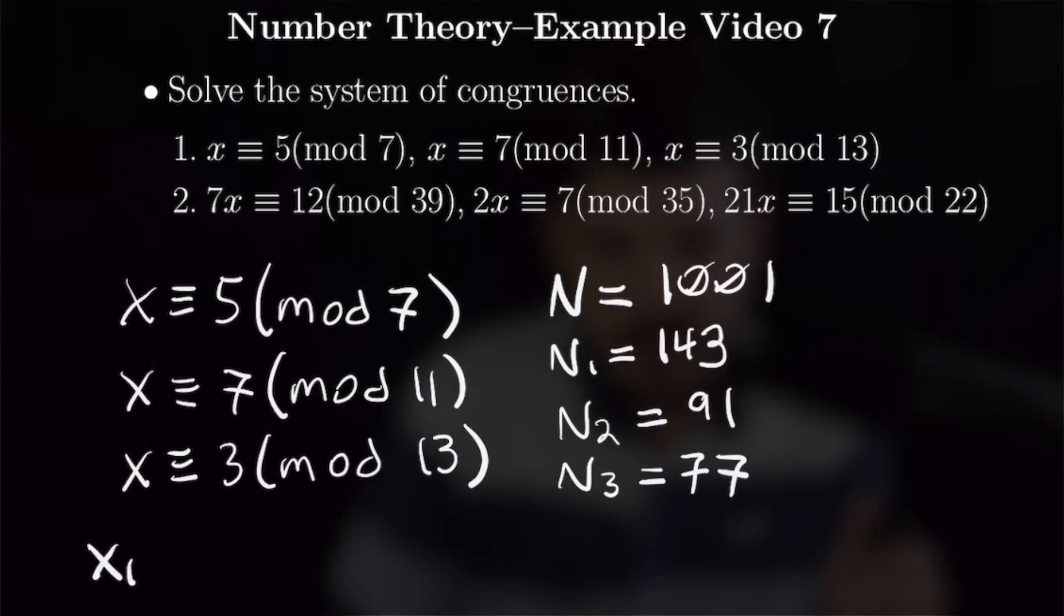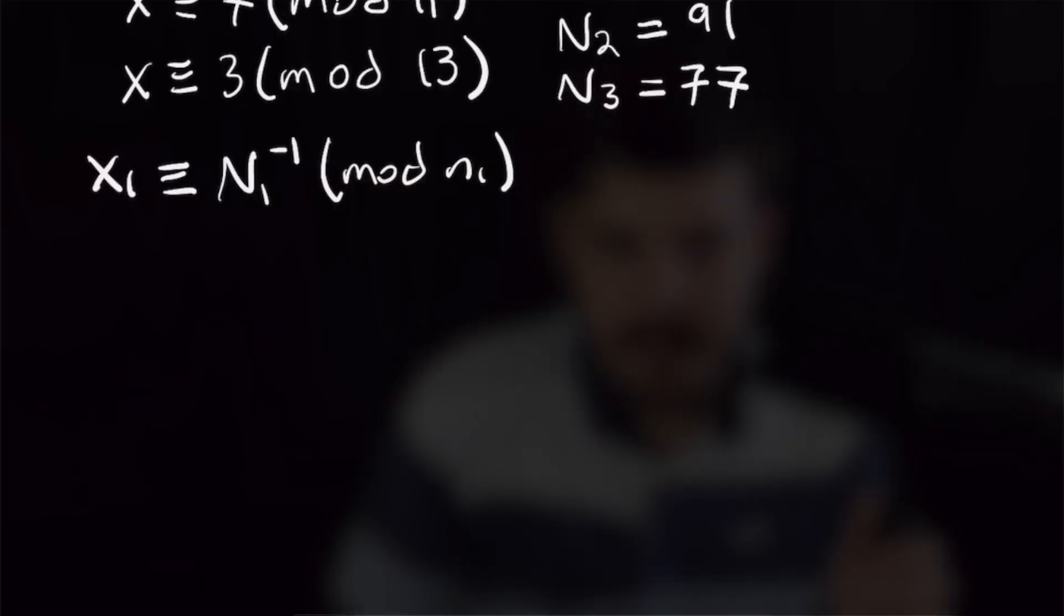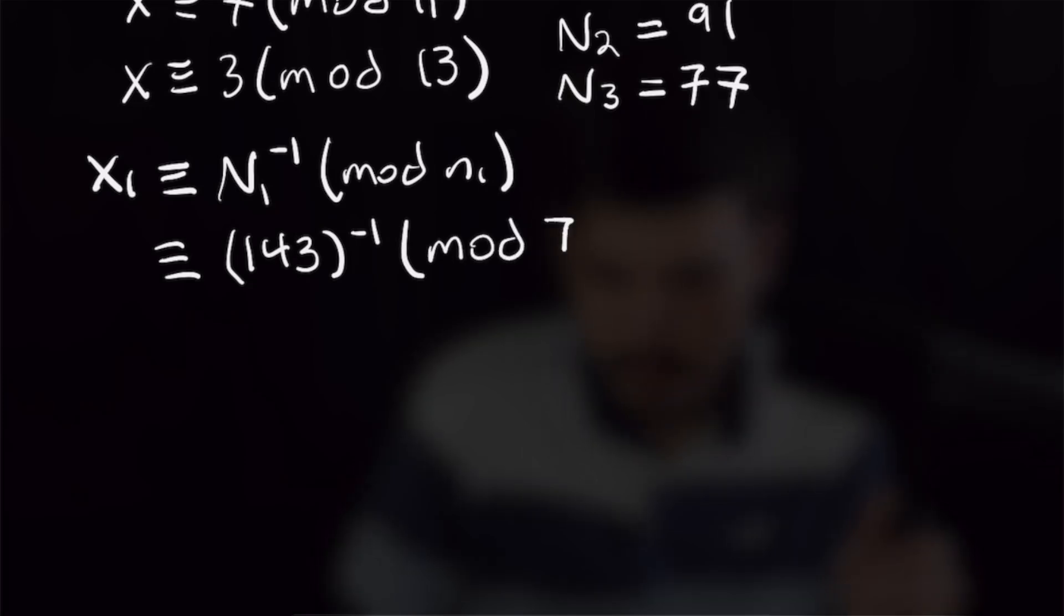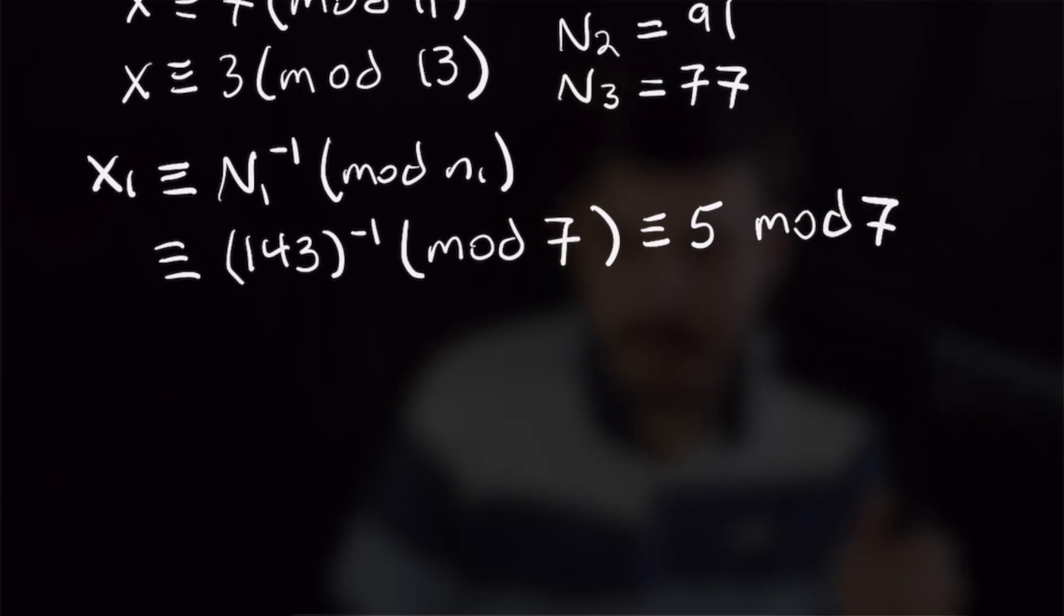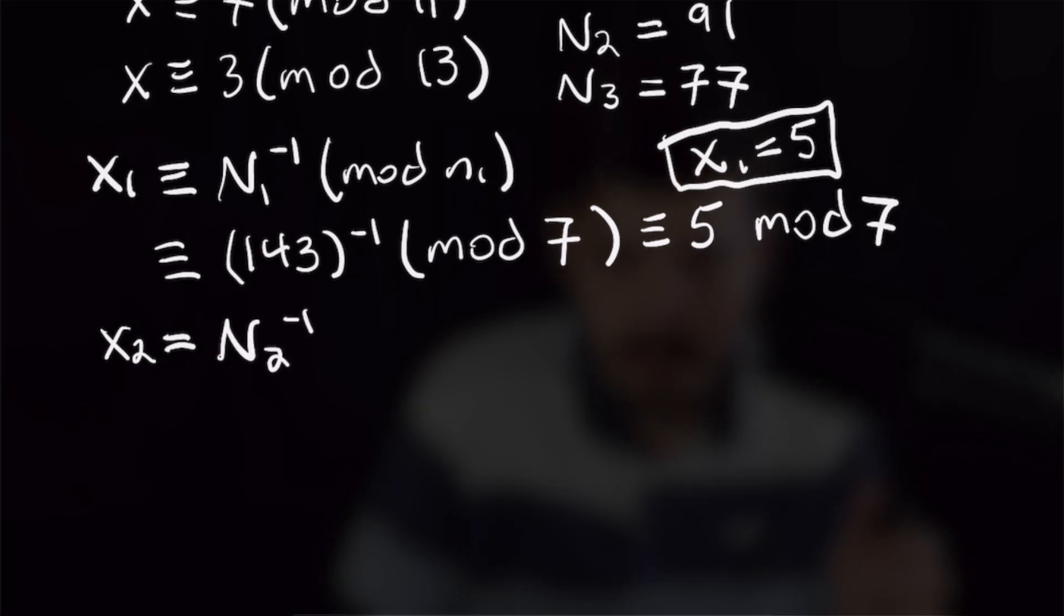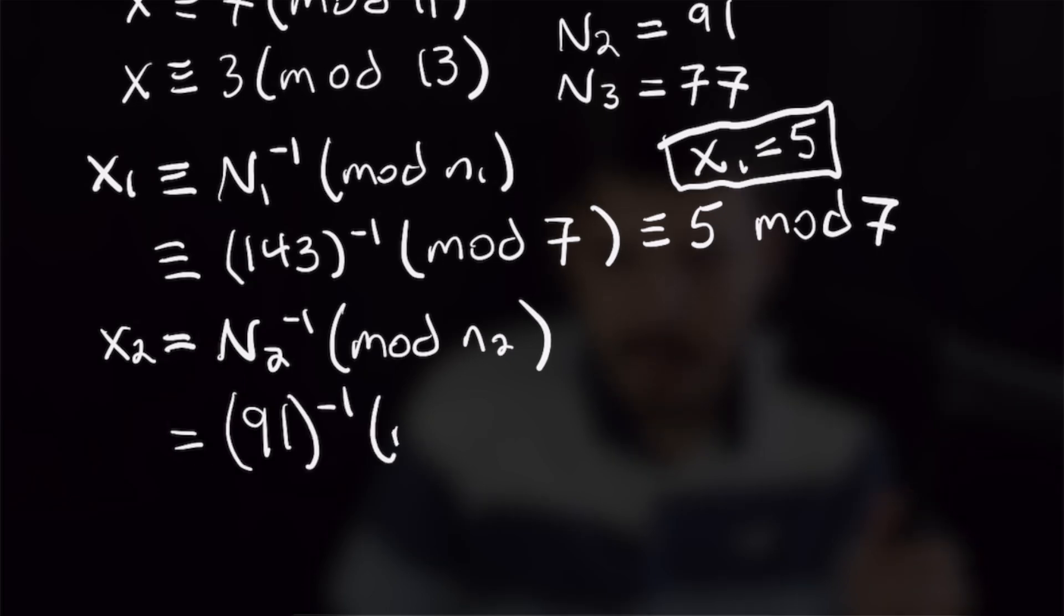From here, we need to derive our x1, and x1 is congruent to n1 inverse mod small n1, and small n1 is just what we are taking mod in the first equation. So we will have x1 is congruent to 143 inverse mod 7, and 143 inverse mod 7 is 5, so we have that x1 is congruent to 5 mod 7. For x2, we're going to use the same process. We need big n sub 2 inverse mod little n sub 2, and we will find that 91 inverse mod 11 is 4.